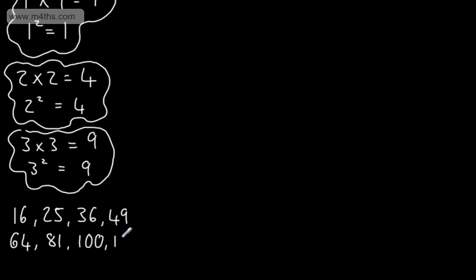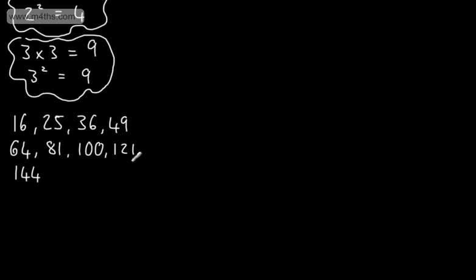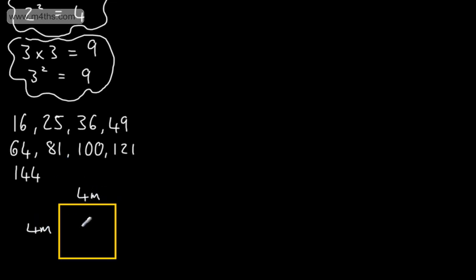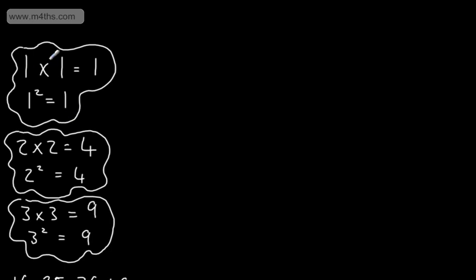We'll have 100 and 121. This is 4 squared, 5 squared, 6 squared, 7 squared, 8 squared, 9 squared, 10 squared, 11 squared, and 12 squared. If you want a visual representation, if I just go ahead and draw a square, and I put on some side lengths — say this one is going to be 4 meters and this one is going to be 4 meters — we can say that the area is going to be 16 meters squared. The square of 4 is 16. So they're square numbers: the same number multiplied by itself gives us a square number.